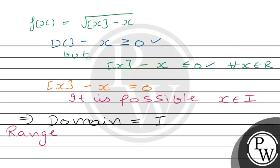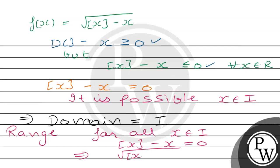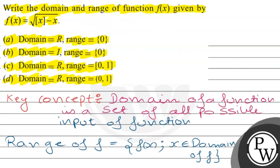Now find the range. We have our domain, which is I. For all x belonging to I, the square root of the greatest integer function of x minus x equals the square root of 0, which is 0. This implies that the range is {0}. So option B is correct — domain = I, range = {0}. I hope you understood it well. All the best, thank you.